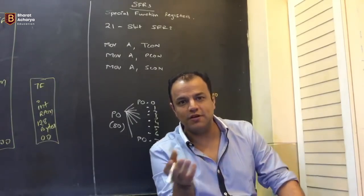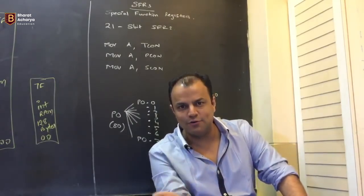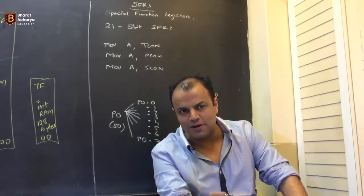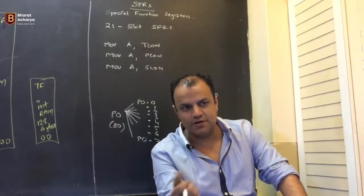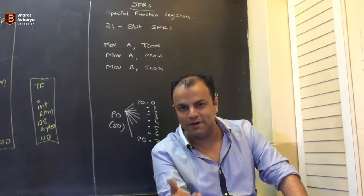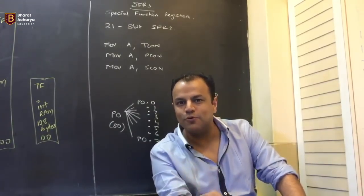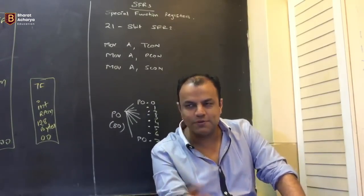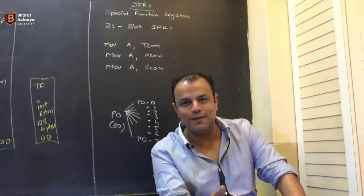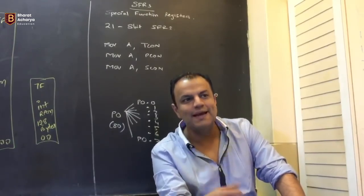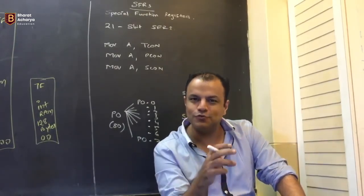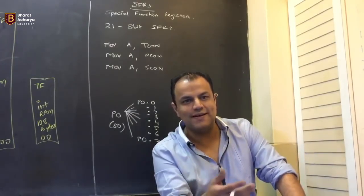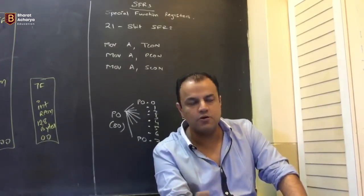A and B are used for storing values during a program. A is the accumulator. B is used for multiplication. PSW is the flag register. P0, P1, P2, P3 are the port latches. SP is the stack pointer. DPH and DPL form DPTR, the data pointer. TCON and TMOD are used for programming timers. TL0, TH0, TL1, TH1 are used to hold a count for timers. IE and IP are used for enabling interrupts and deciding their priorities. SCON is used to program the serial port. SBUFF is used to hold data during serial communication. PCON is used to decide the power saving mode — idle mode or power down mode.